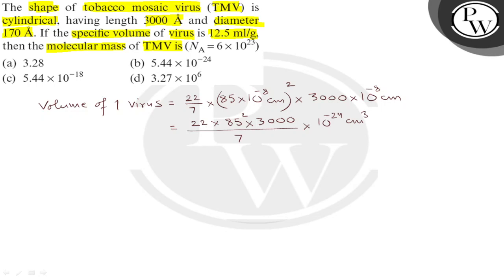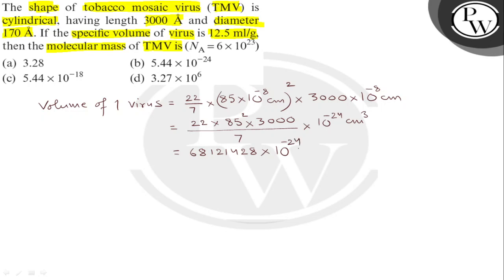The calculation is 22 into 85 into 85 into 3000 divided by 7, which gives 6.81428 into 10 raise to minus 24 milliliter — that is the volume of one virus.